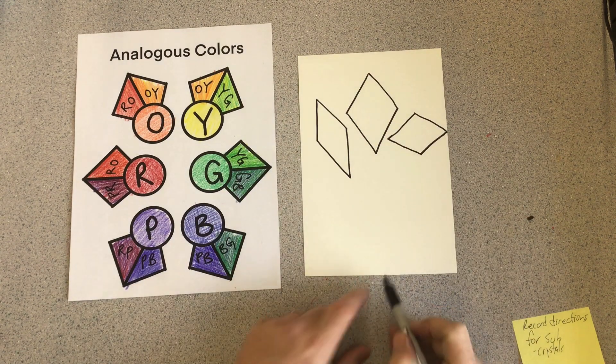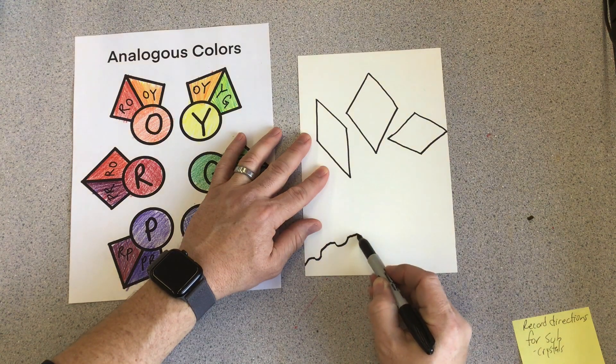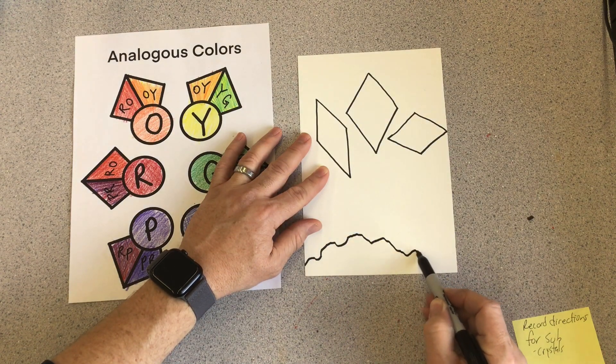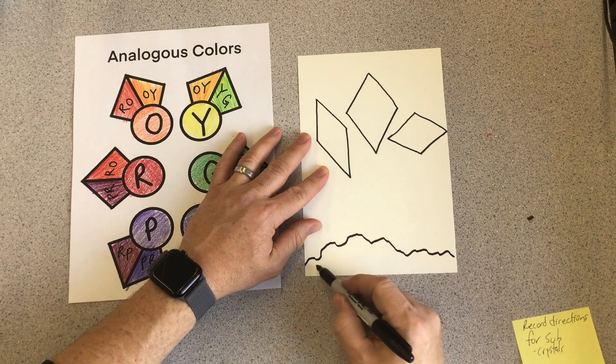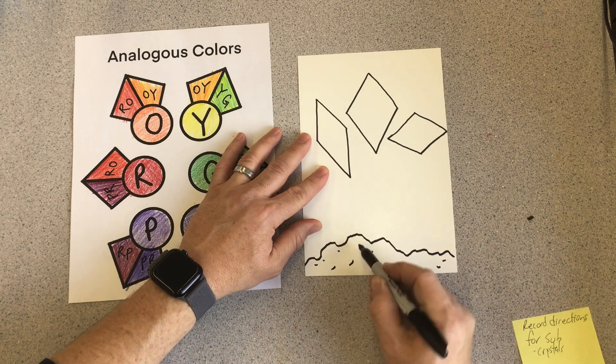Then finally down here at the bottom, I'm going to draw kind of a rough, bumpy line that represents the ground. Put some little curved lines to make the texture look rough.